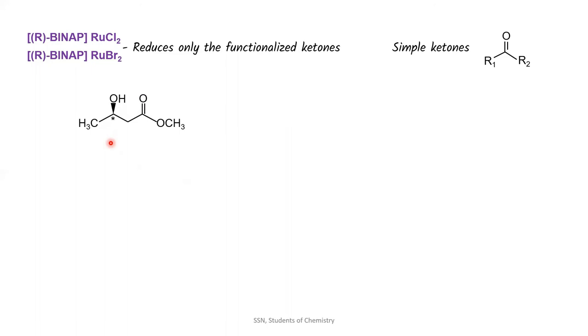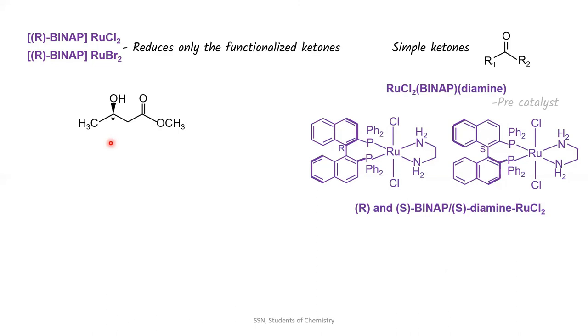Hence, asymmetric hydrogenation of the simple ketones had a question mark until the discovery of ruthenium dihalide BINAP diamine complex, which is used as a pre-catalyst.